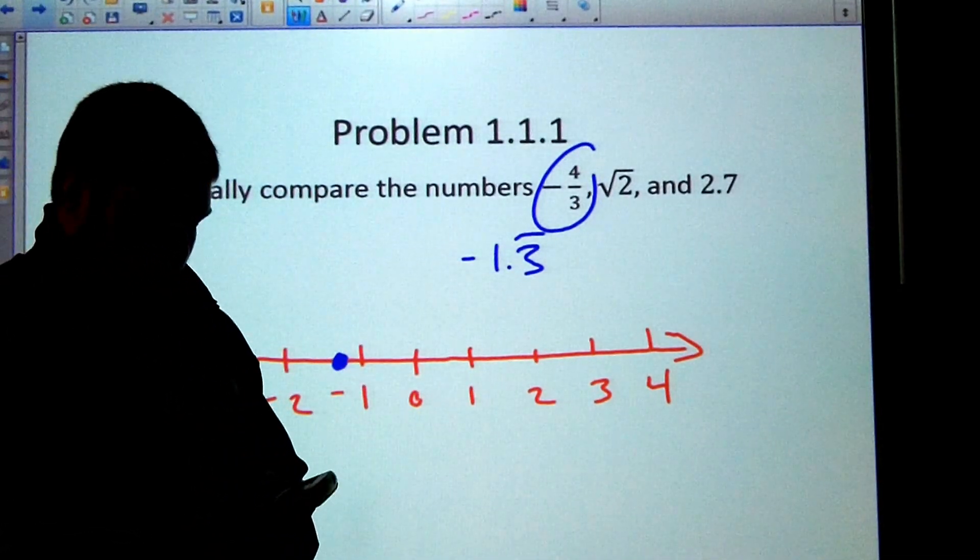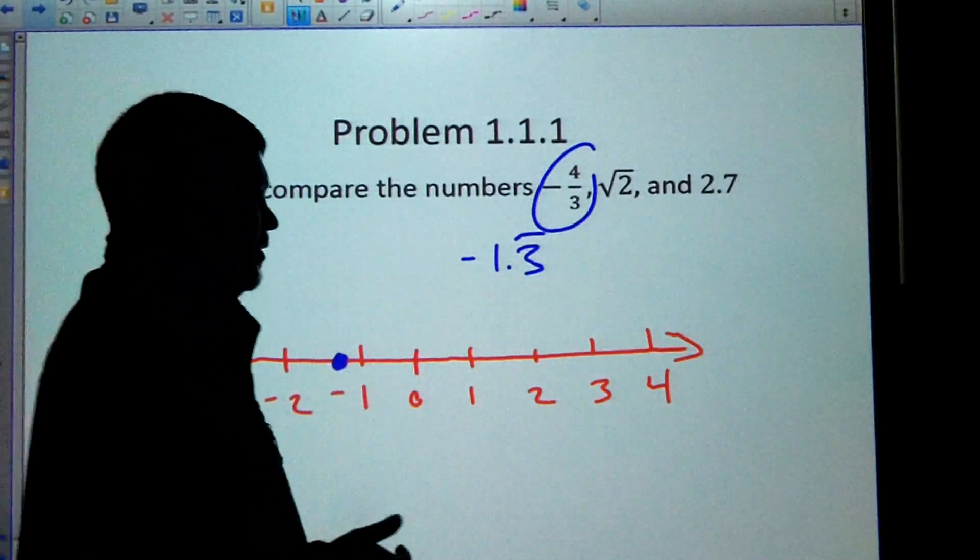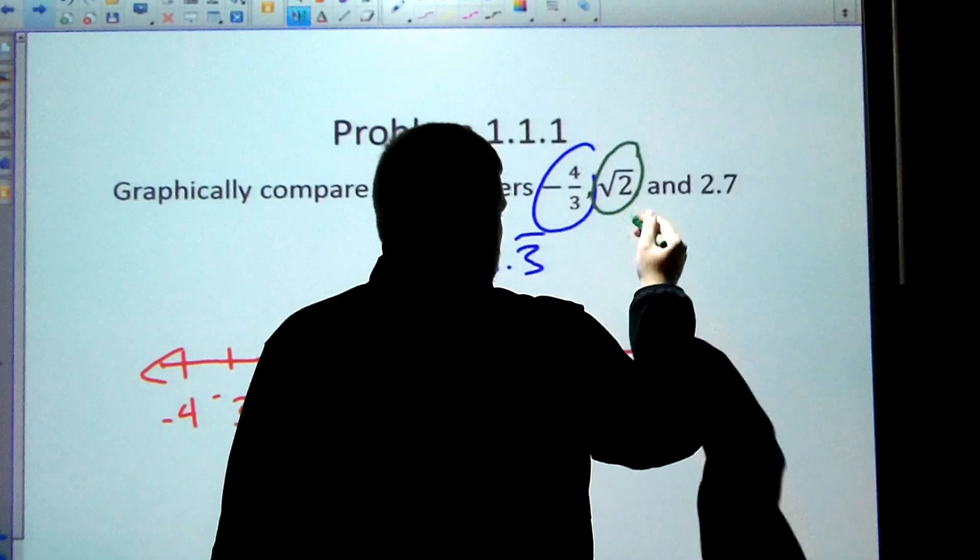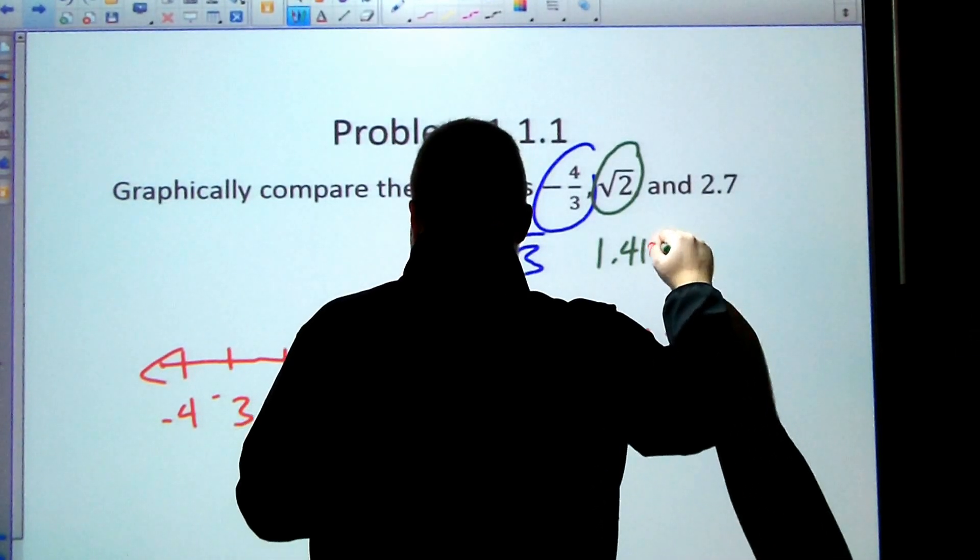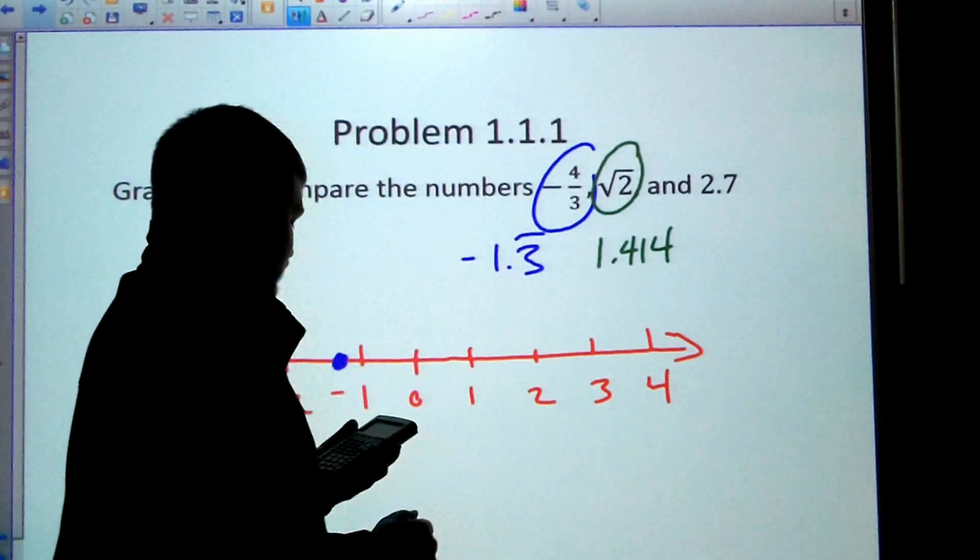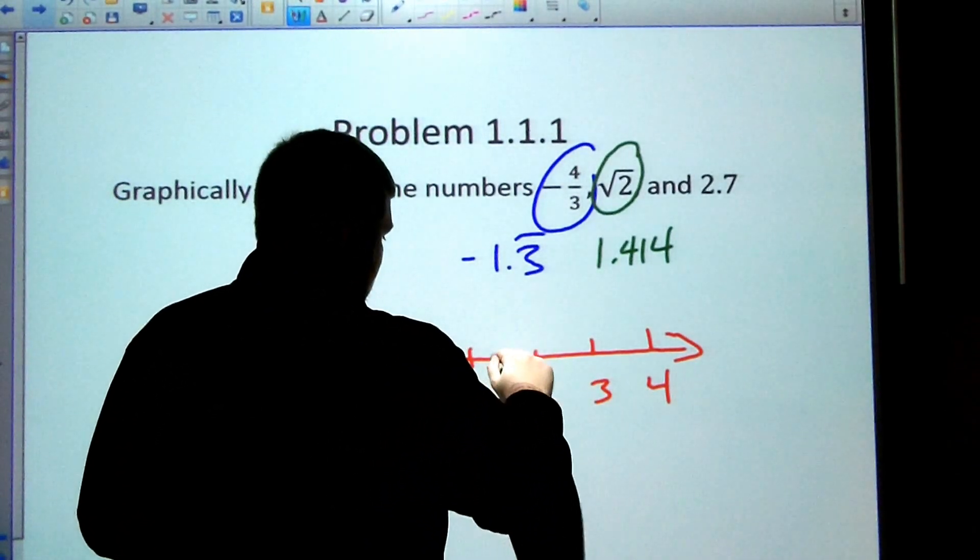Square root of two. Type it in. It's about 1.414. So this is approximately 1.414, which is approximately somewhere about right here.